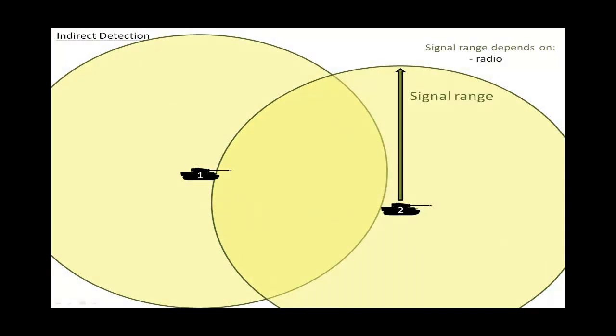Now we'll talk about indirect detection. Imagine you're playing together with a friend. Your tank is number 1 and his the number 2. Every tank has a signal range which depends on the tank's radio. The signal range can vary between only a few hundred meters and up to over 800 meters.